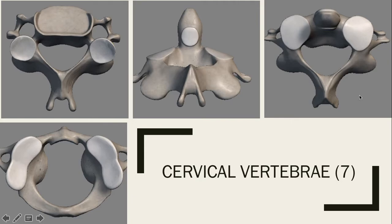And then in this superior view, you can see it here as well. We also have the bifid spinous process here. With all the rest of the cervical, thoracic, and lumbar vertebrae, this is just called the spinous process, but on this axis bone it is called the bifid spinous process.